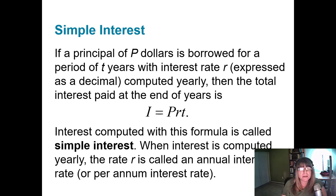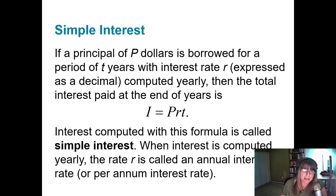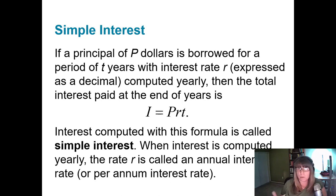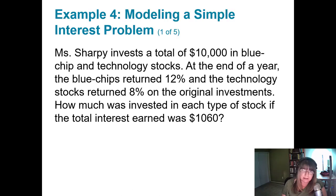Back to real-world problems — let's talk about simple interest. If you borrow or save money, generally there will be a fee: if you borrow, you pay it; if you save, the bank pays you — either way it's called interest. Simple interest is a flat rate based on the principal, the interest rate, and the number of years. Interest is calculated as I equals P times R times T.